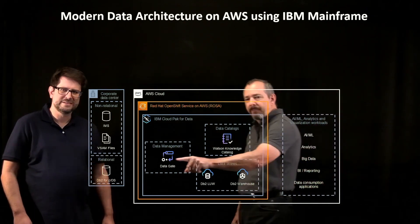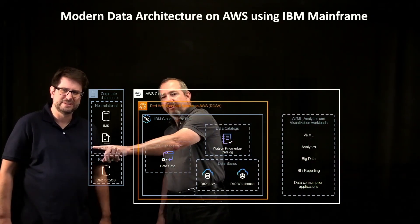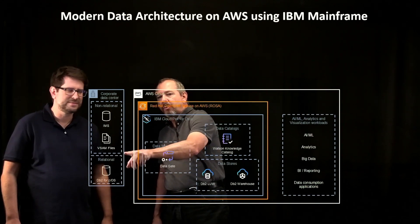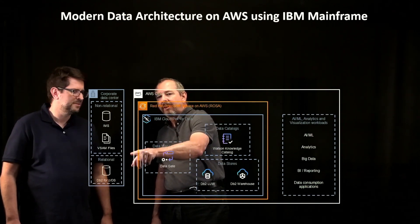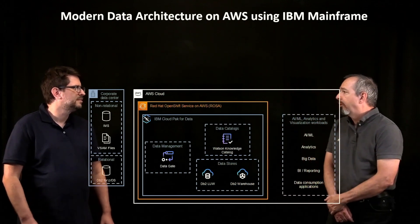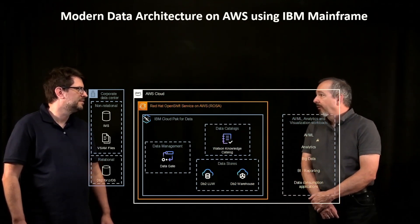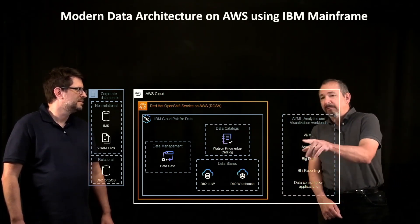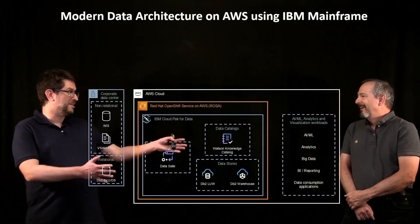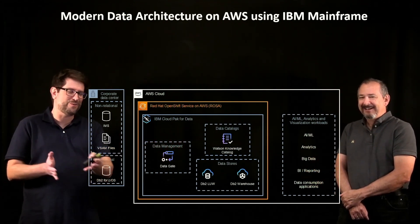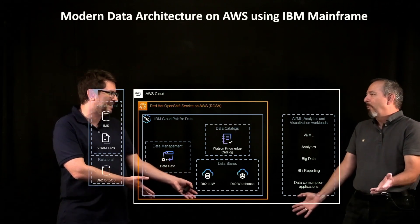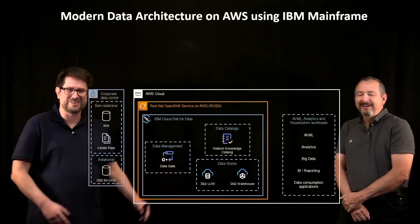All of this is good because of the real-time aspect. This connection between the back-end mainframe and this hybrid environment — AWS offers a service called Direct Connect: dedicated, guaranteed bandwidth, secure, encrypted between the sites. That's really important because it's critical for these customers that the data is not moving over the public internet. It's not over the wire.